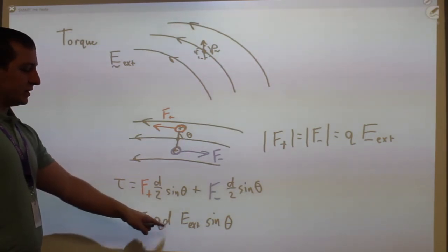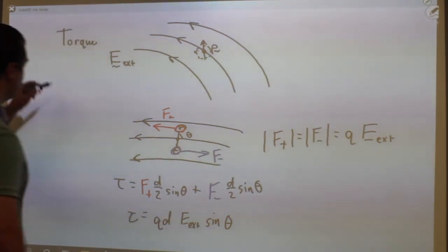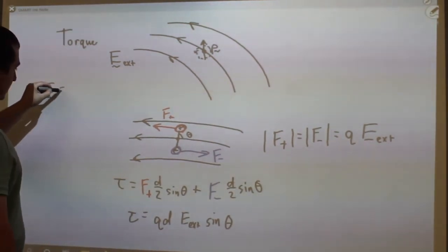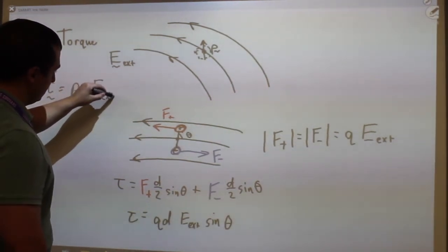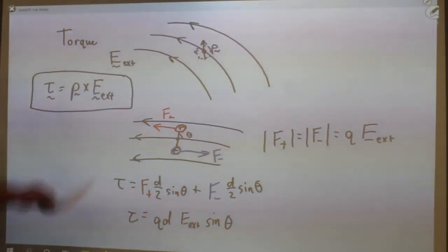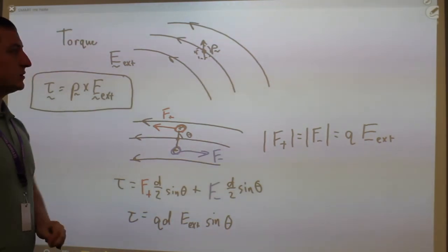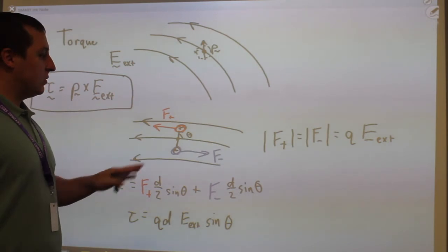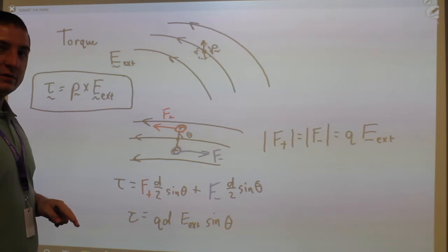Hopefully you recognize this as a cross product. You have here the dipole moment Q times D, and the external field. So I can write the torque as the cross product of the dipole moment and the external field. I write it as p × E_ext so you do not confuse it with the field of the dipole — those are two separate things. The torque on the dipole is due only to the external field.